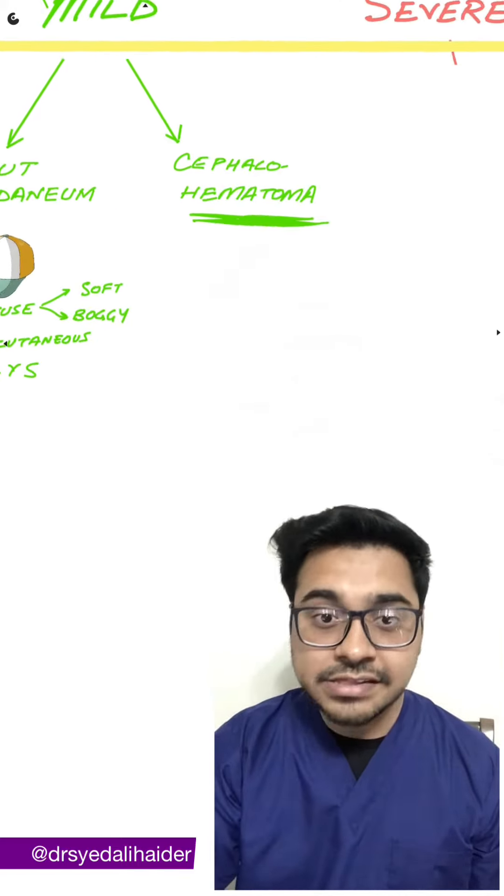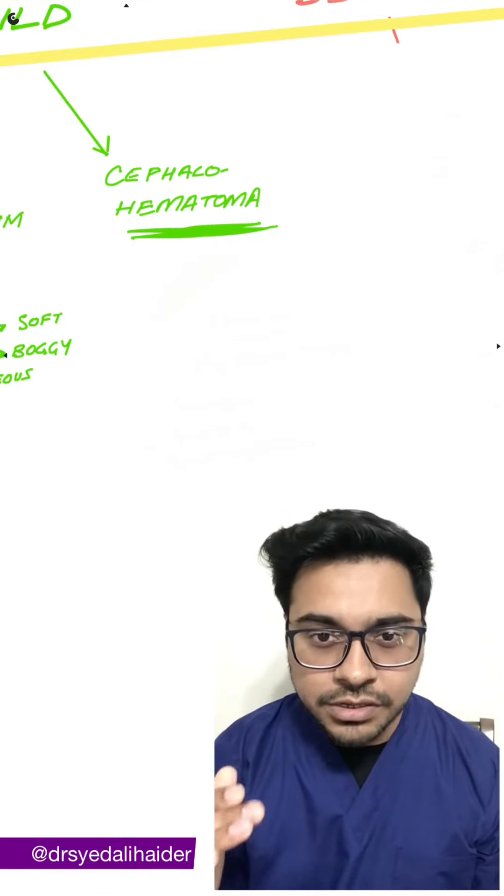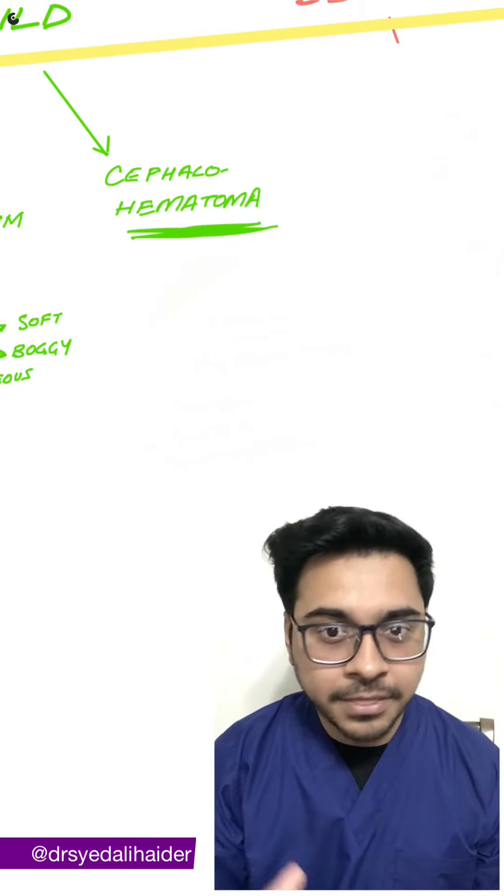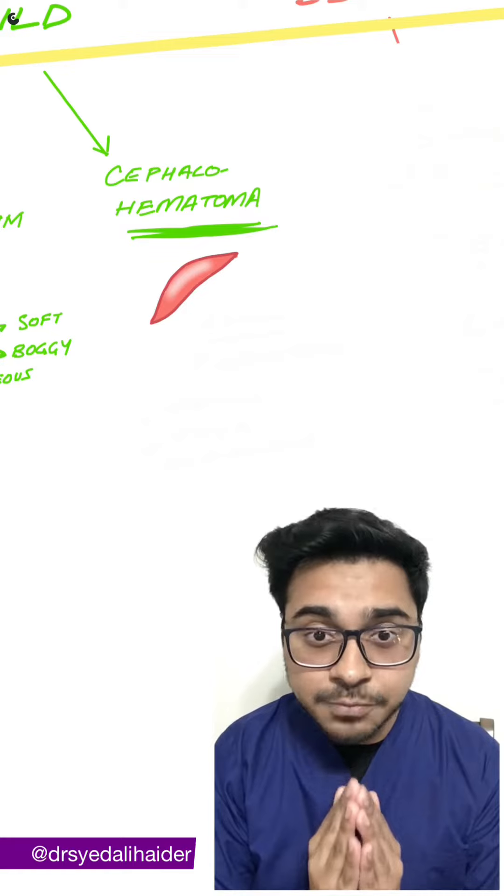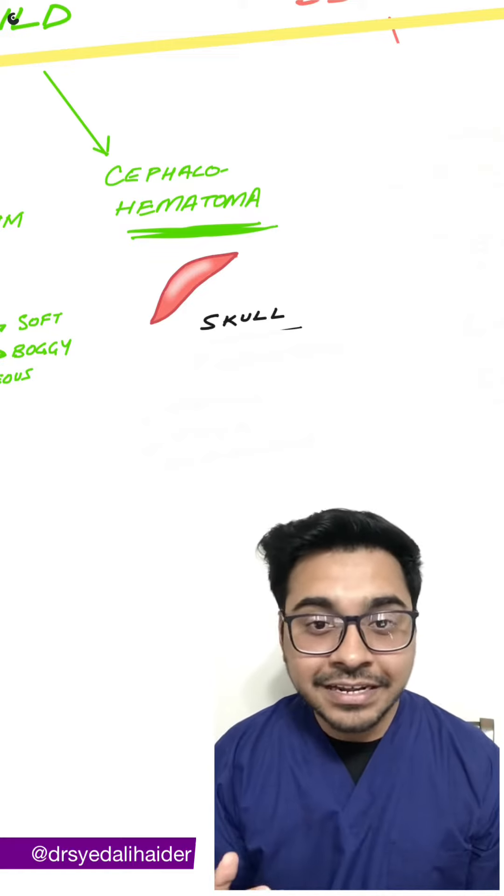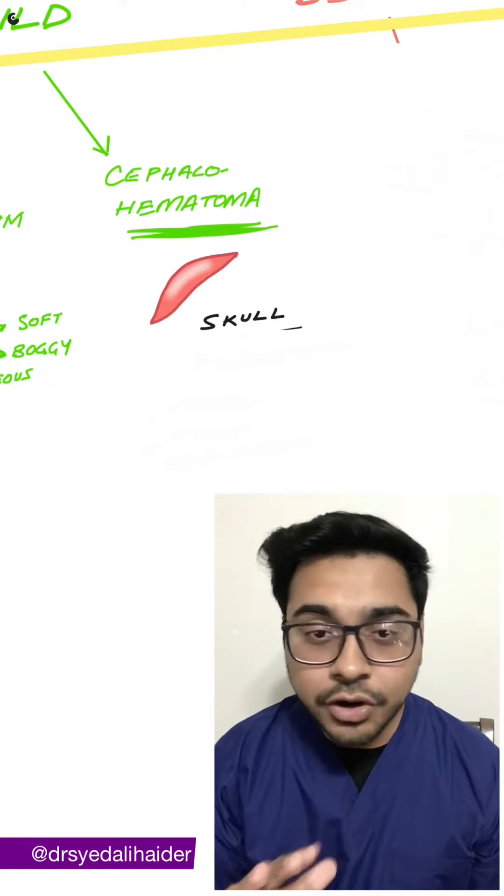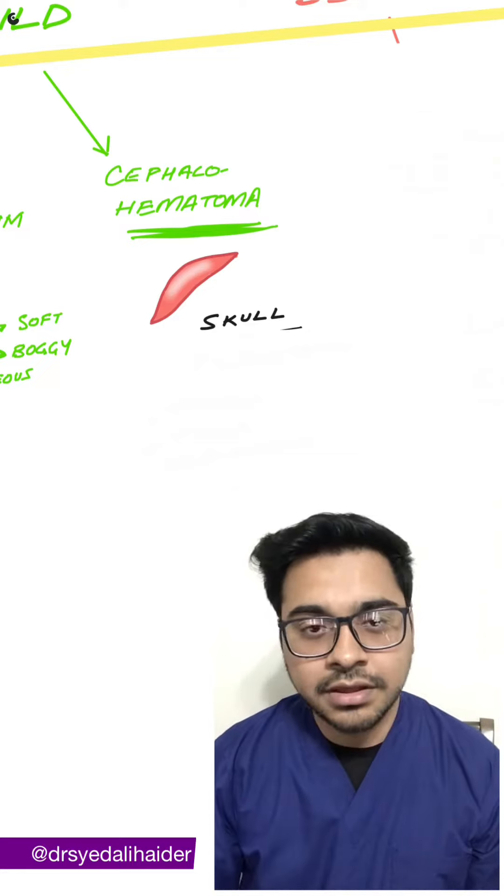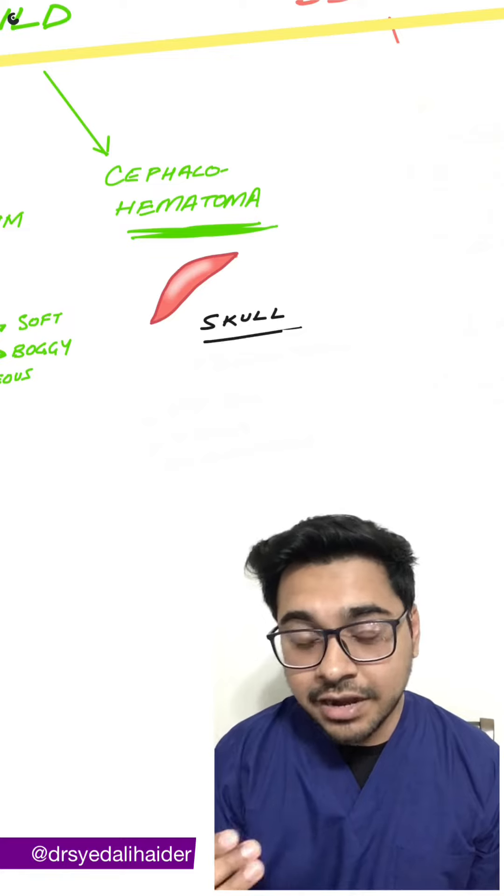On the other hand, in cephalohematoma, focus on the word hematoma, which is basically localized pooling of blood. Cephalo also makes me think of skull. So the bleeding will be localized and will not cross the suture. It will remain between the skull and the periosteum.